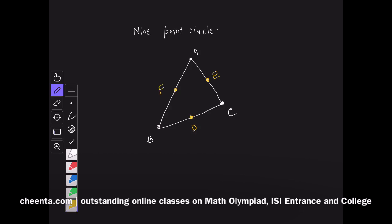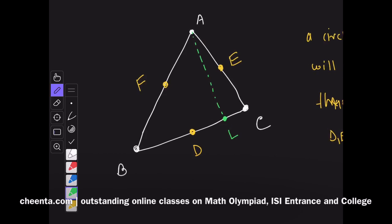Of course, through three non-collinear points a circle will pass through D, E, F. We also want to show that they pass through some other interesting points. For example, if I drop a perpendicular from A to BC, suppose this point is L, then I want to show that the circle that passes through D, E, F happens to pass through L as well.